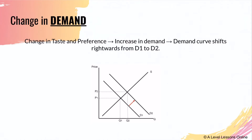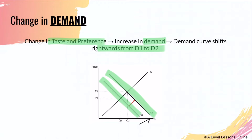Let's say there's a change in taste and preference of a good - for example, fidget spinners back in 2015-2016. Fidget spinners were a huge thing, so there was a surge in demand. Everyone wanted to buy it, so there will be an increase in the demand for it. As a result, the demand curve shifts rightwards from D1 to D2, as seen in green. When there is an increase in demand or supply, the curve will always shift outwards or rightwards.